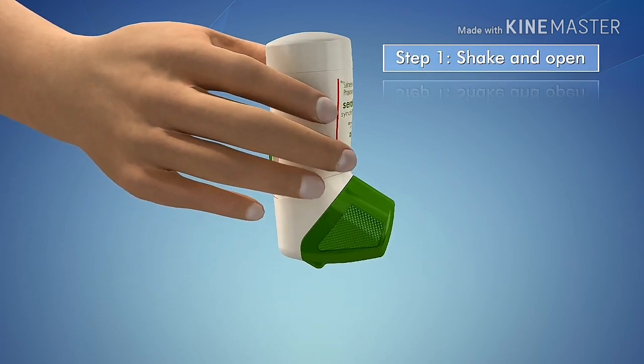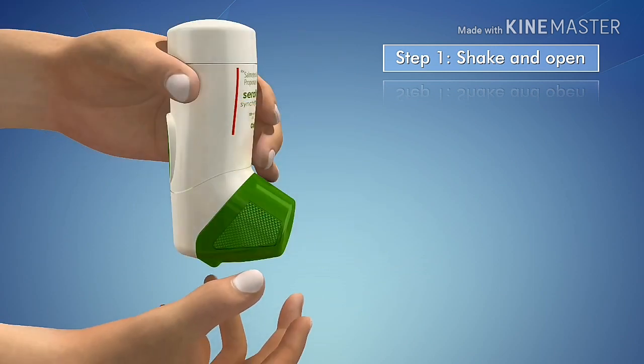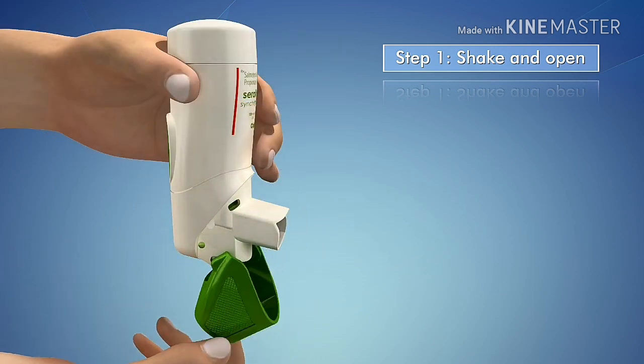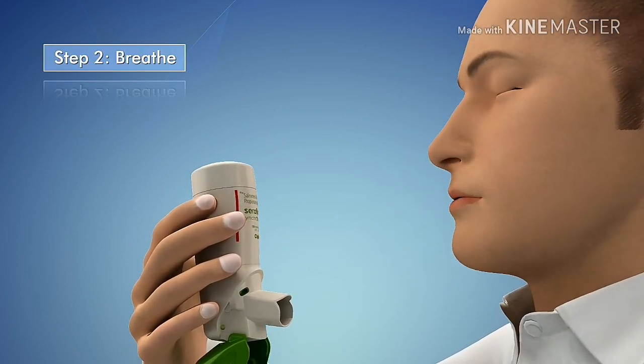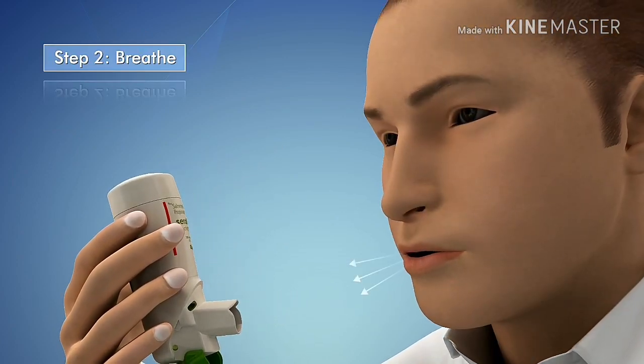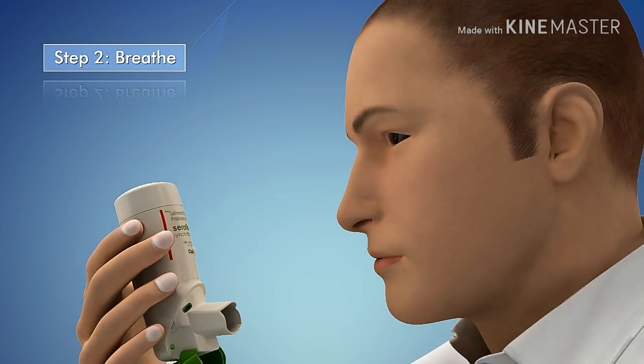Step 1. Shake the inhaler well and open the inhaler by folding down the mouthpiece cap. While sitting or standing, hold the inhaler upright. Breathe out normally as far as it is comfortable through your mouth.